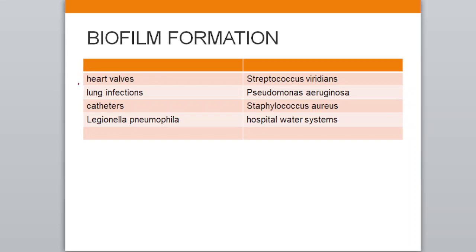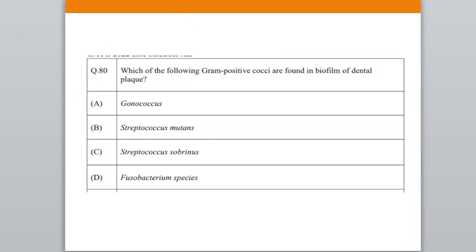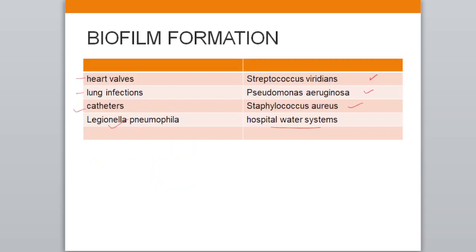Examples of biofilms include: heart valves — Streptococcus viridans; lung infections — Pseudomonas aeruginosa; catheters — Staphylococcus aureus; and hospital water systems — Legionella pneumophila. Last year the question was: which of the following gram-positive cocci are found in the biofilm of dental plaque? This year a similar question may come: which microorganism forms biofilm on catheters — the answer is Staphylococcus aureus.